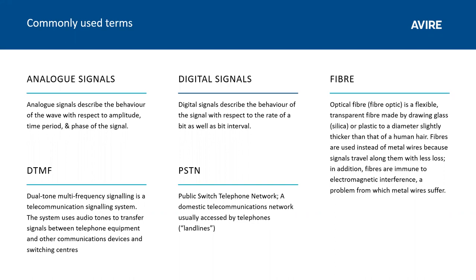Digital signals move away from the wave-and-amplitude world into the world of bit rate — a series of ones and zeros with inherent strengths over analog signals, which is a big part of why the network is being moved across. PSTN is the public switch telephone network, the domestic telecommunications network in a given country. If I say PSTN, think landline, because that's what we're talking about.